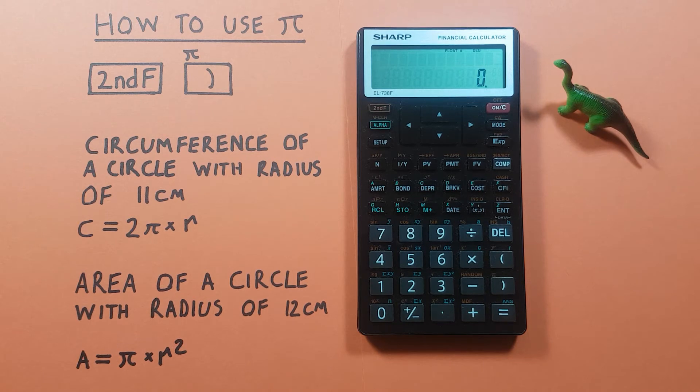Another example of working with PI would be finding the area of a circle with a radius of 12 centimeters. For this, we have the formula A = πR². So we can go second PI...